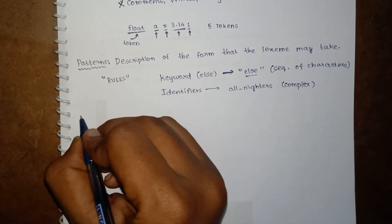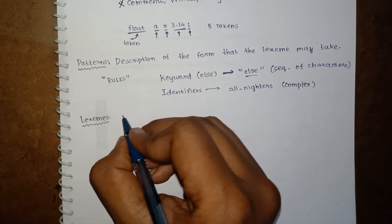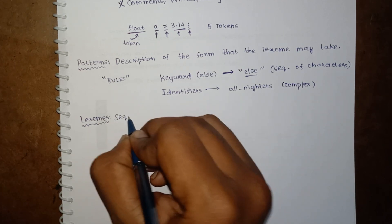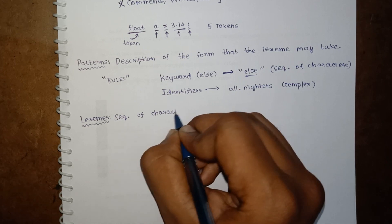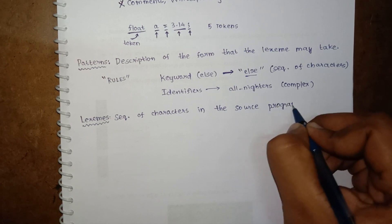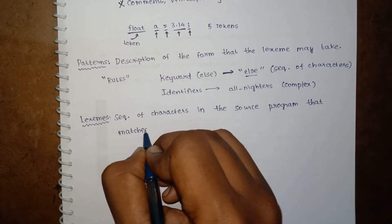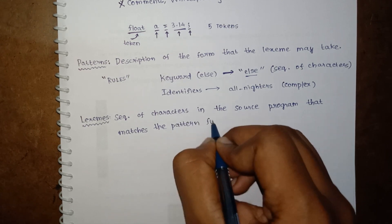Next, coming to lexemes. Lexemes are sequence of characters in the source program that matches the pattern, the pattern for a token.